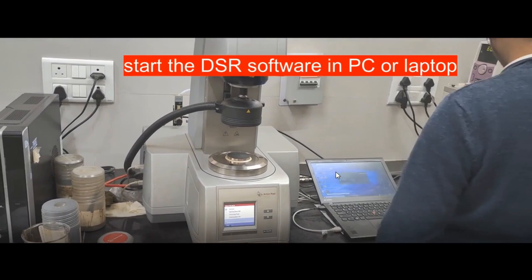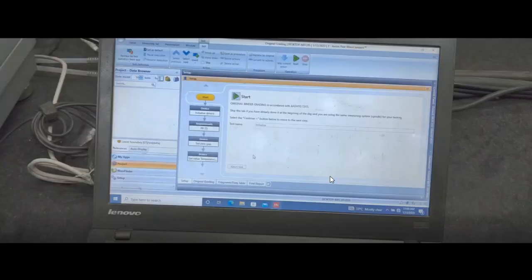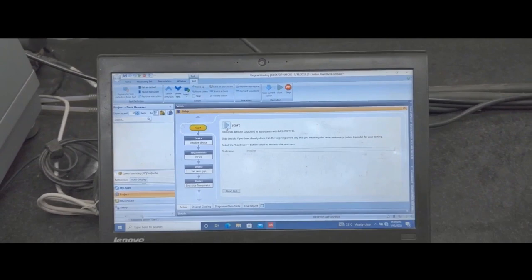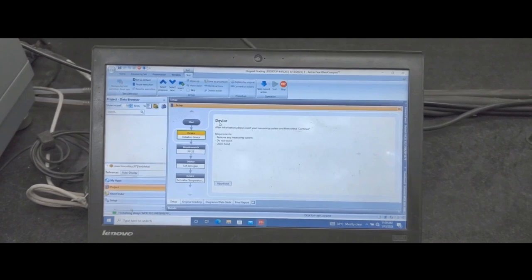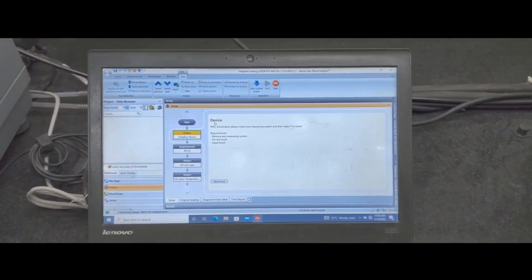Then the software is started in the laptop or in the PC, whatever machine is attached to the DSR. The icon for the DSR machine is generally available at the desktop. The name of the icon will depend upon the type of machine being used, and here you can initialize the software.